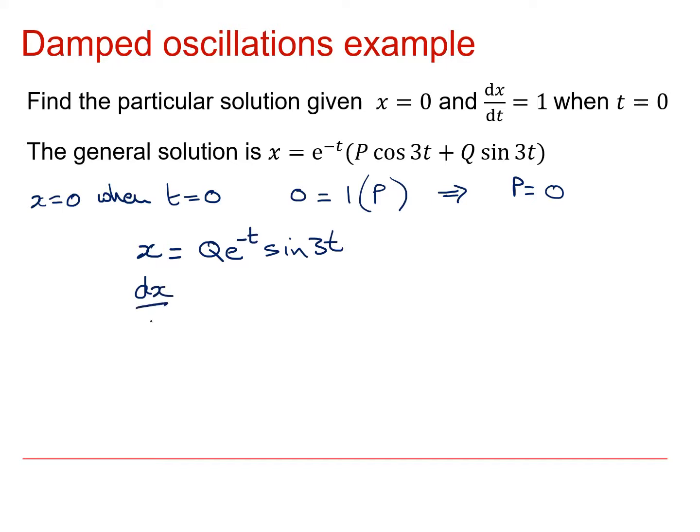And now I can look at dx by dt, and that's going to be minus q e to the minus t sine 3t plus 3q e to the minus t cos 3t. And I know that dx by dt equals 1 when t equals 0. And if I plug that into there, this bit's going to be 0, and this bit here is just going to be 1, and this bit is going to be 1. So I just get 1 equals 3q, and that gives me q is equal to 1 third.